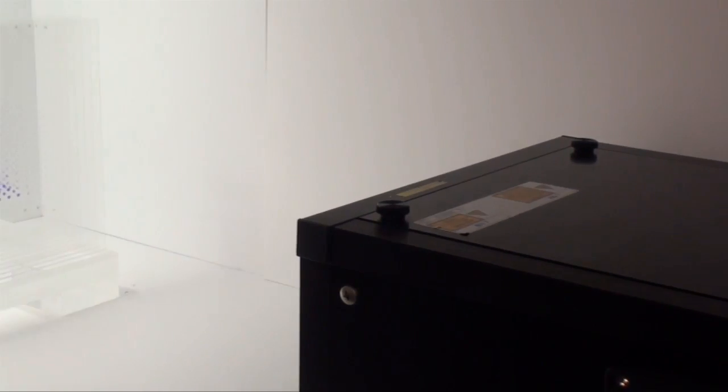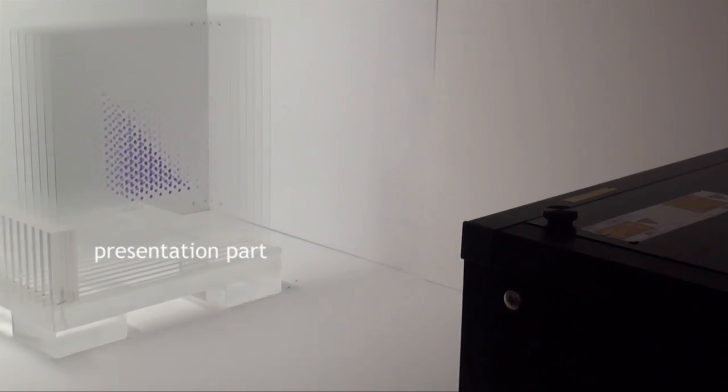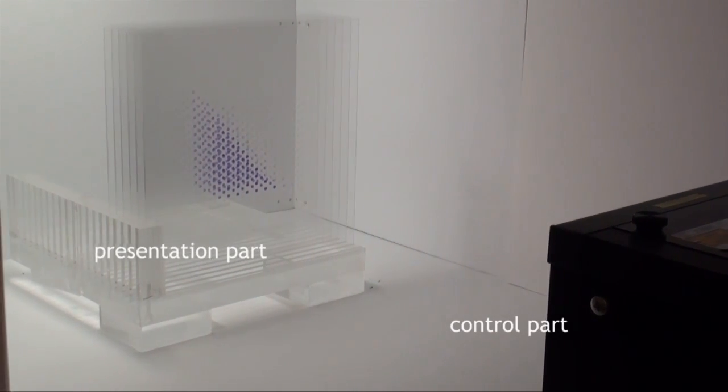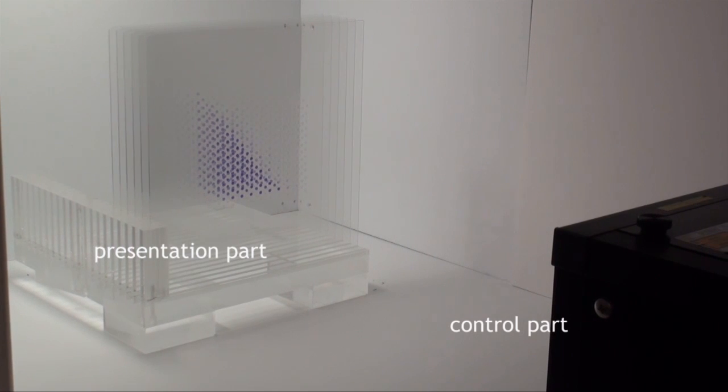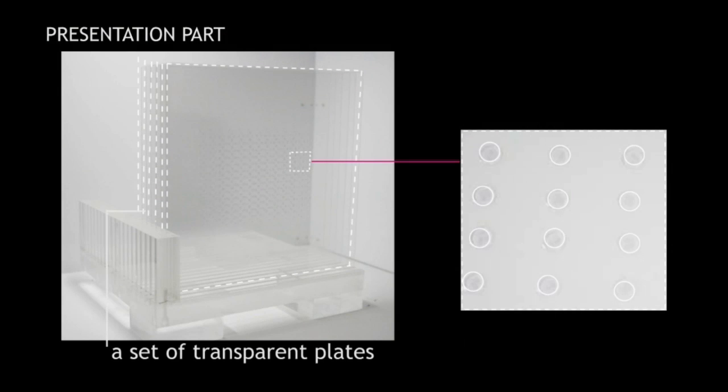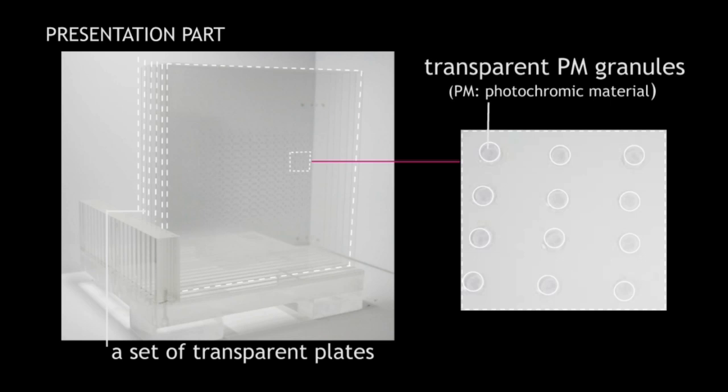Photochromic Sculpture consists of two parts: a presentation part and a control part for manipulating projected ultraviolet light. The presentation part is composed of a set of transparent plates coated with photochromic material granules.